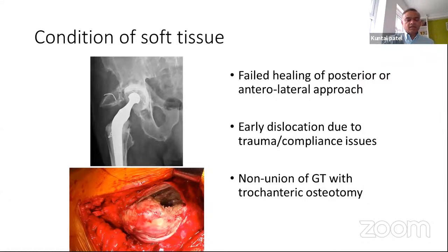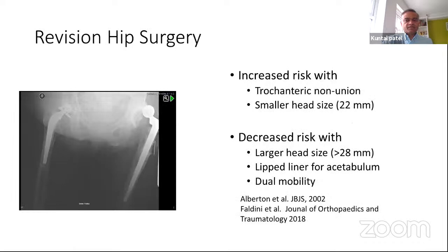Soft tissues play a very important role in stability. If the abductors fail to heal or there's early traumatic disruption of soft tissue, both contribute to dislocation. If a hip replacement was done through a greater trochanteric osteotomy and that hasn't healed, it's a big factor causing hip dislocation. Revision hip surgery carries double the risk of dislocation — or more — and that risk increases further with established trochanteric non-union or smaller head size, decreasing with larger head size, lip liner, or dual mobility.